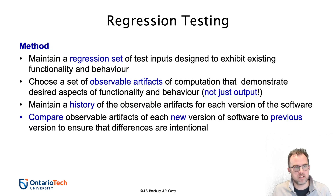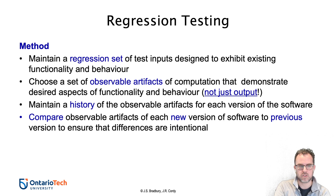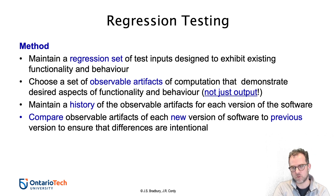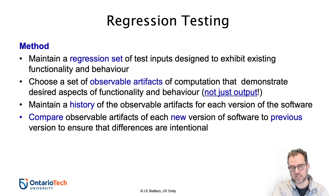When we're talking about the method for regression testing, it's really designed around exhibiting existing functionality and behavior. This is in some ways very similar to requirements testing or functionality testing — those types of tests play a key role. With regression testing, one of the things you want to do is choose a set of observable artifacts that demonstrate aspects of the functionality and behavior of the software that you want to preserve.